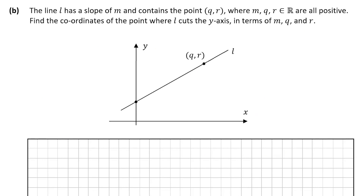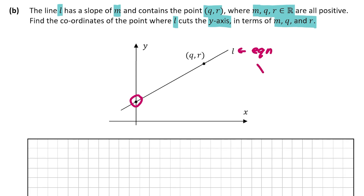In question B, we're told that the line L has a slope of M and contains the point (Q, R), where M, Q, and R are real numbers and all positive. We're asked to find the coordinates of the point where L cuts the y-axis in terms of M, Q, and R. To do this, I'm going to find an equation for L and then let X equal 0 to find those coordinates, since X is 0 on the y-axis.